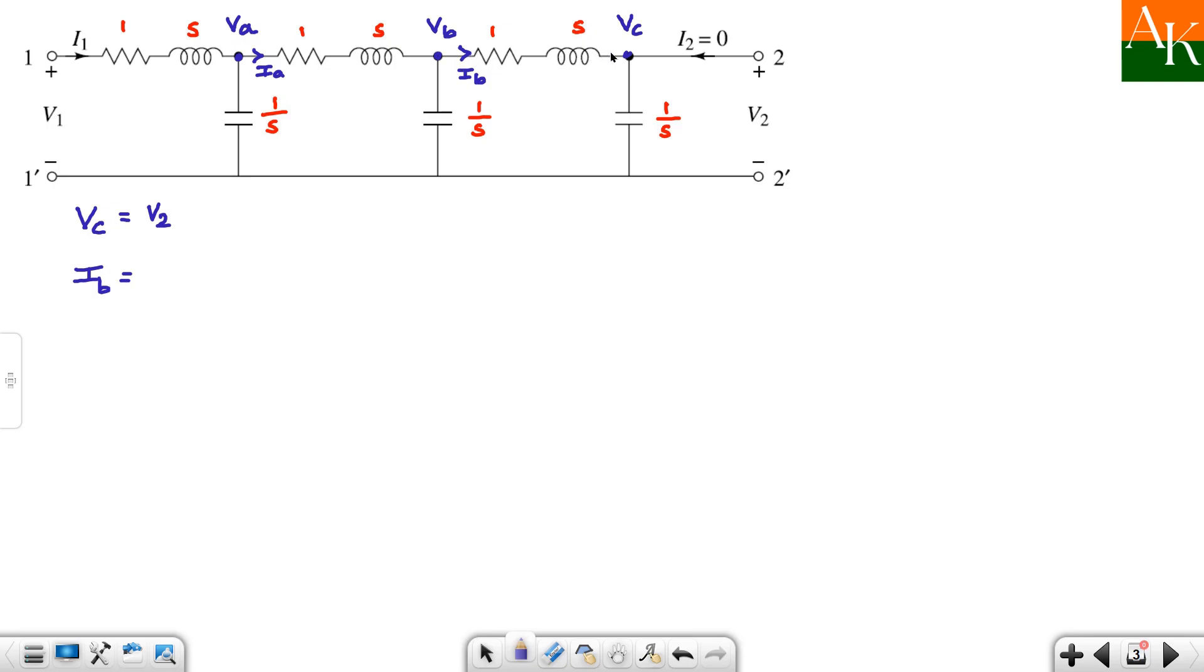Now ib: ib will come here and then it will get splitted into 2 parts. But the right side part, the current going there is 0 because port 2 is open circuited. So entire ib will flow through this one. So ib value becomes vc divided by 1 by s, which is nothing but s times vc. And vc value is v2. So we have found ib.